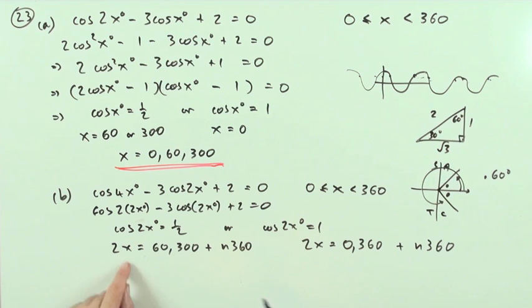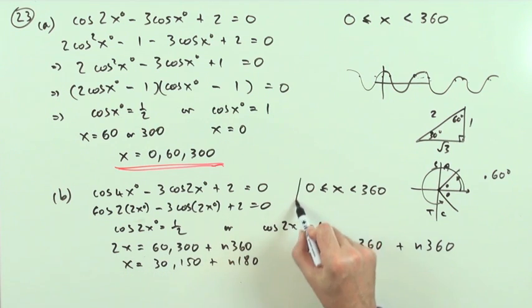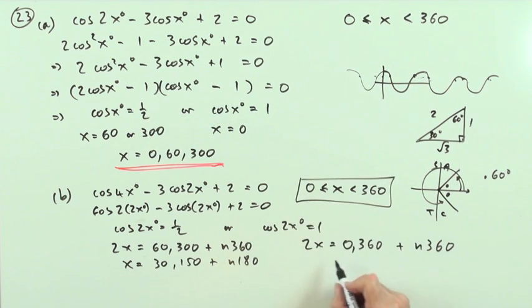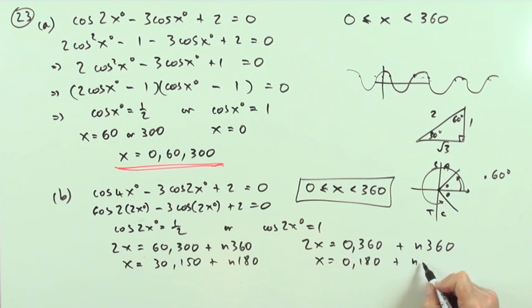This part would be: well, if 2x is 30 or 60 or 300, that means x is 30 or 150, plus having that as well in lots of 180, which means I can keep adding 180s to those or taking 180s off them until I get all the answers inside this interval. Same here: dividing by 2, I've got 0 and I've got 180, dividing that by 2 as well, plus as many more 180s as you like.